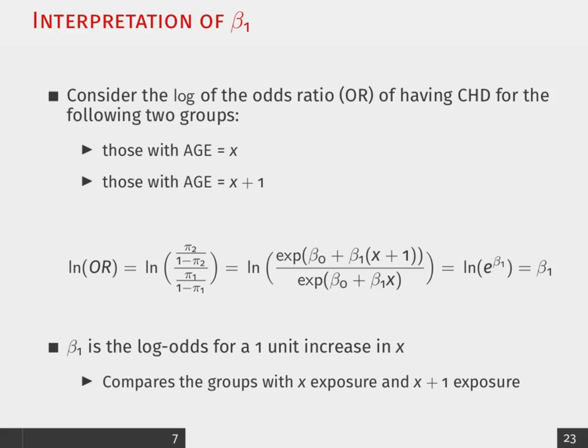So, essentially, what we're doing is we're just comparing two groups, one unit increase in x apart, in the difference of their propensity of having CHD.